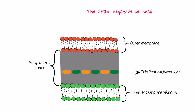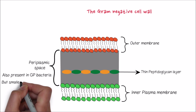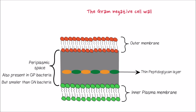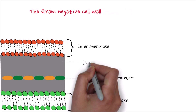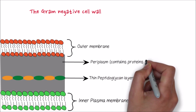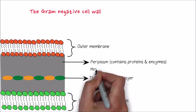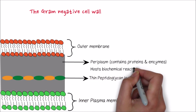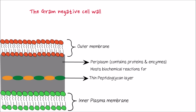The periplasmic space is also present in gram-positive bacteria; however, it is very much smaller when compared with gram-negative bacteria. The substance present in the periplasmic space is called the periplasm. Many proteins and enzymes are present in the periplasm. Periplasm hosts biochemical reactions that cause degradation, transport, and motility.